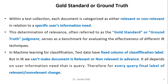Within a test collection, each document is categorized as either relevant or non-relevant in relation to a specific user information need. This determination is referred to as the gold standard or ground truth judgment, and it serves as a benchmark for evaluating different IR techniques. In machine learning classification, test data has a fixed classification label column, but in IR we cannot fix a single training data label as relevant or non-relevant.